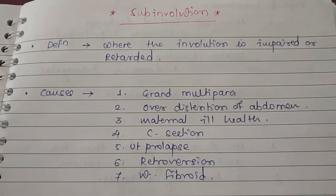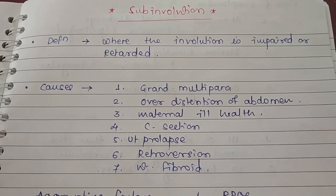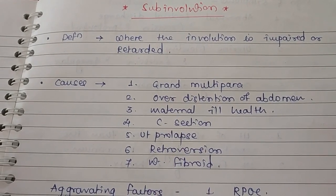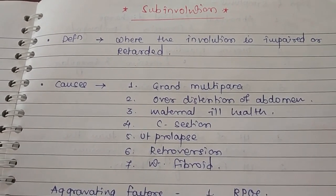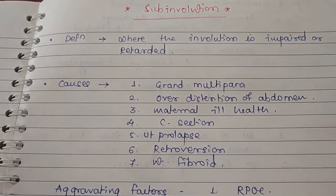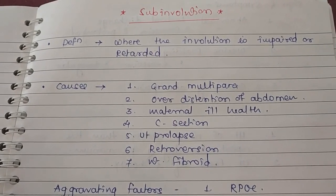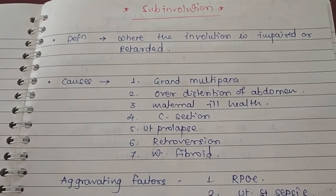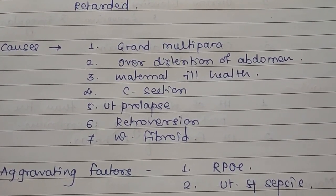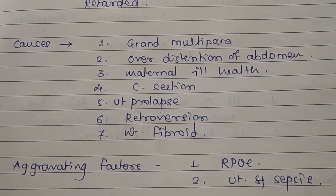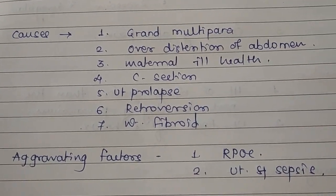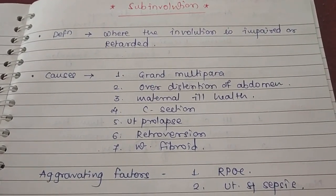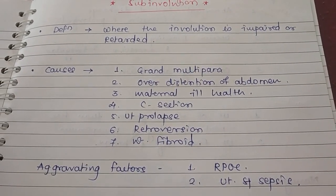The second abnormal puerperium topic is subinvolution. Normal involution means the uterus returns to its pre-pregnant state — approximately 60 grams — within 6 weeks. Subinvolution means impairment or retardation of this involution process. Causes include grand multiparity, overdistension of the abdomen due to multiparity or polyhydramnios, maternal ill health, caesarean section, uterine prolapse, retroversion, and uterine fibroids. Aggravating factors are retained products of conception and uterine sepsis.